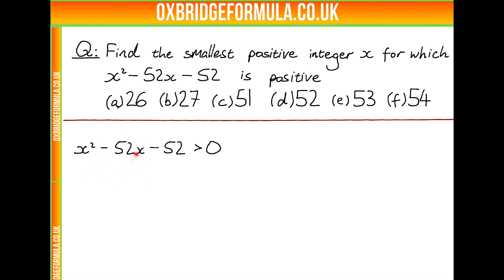And that we will do by considering x minus 26 squared, because 26 is half of 52. So that gives us x minus 26 squared minus 26 squared minus 52 strictly greater than 0, because this is exactly equal to this.